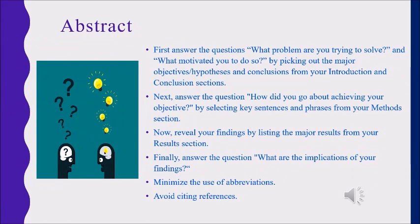The abstract should include: what problem are you trying to solve, and what motivated you to do so — by picking out the major objectives and conclusions from your introduction and conclusion sections. Then answer the question: how did you go about achieving your objective, by selecting key sentences and phrases from your methods section. Then reveal your findings by listing the major results from your results section. Finally, answer the question: what are the implications of your findings? Prepare a simple abstract.